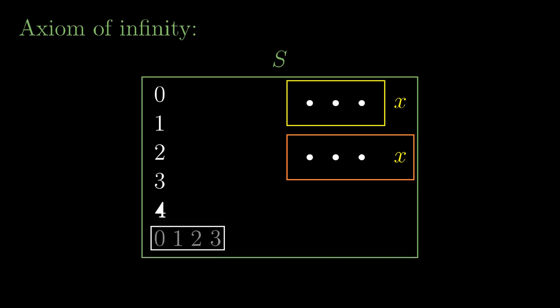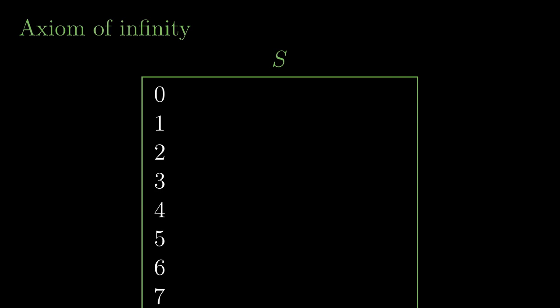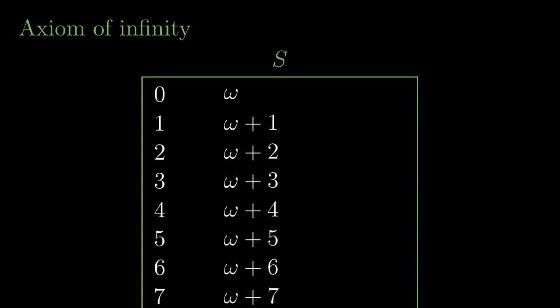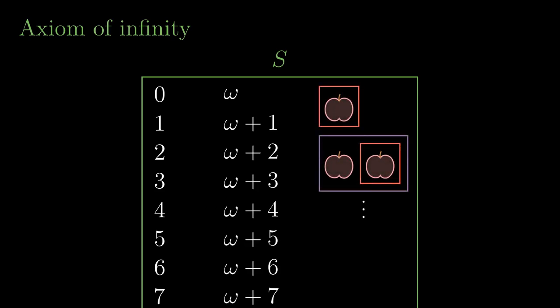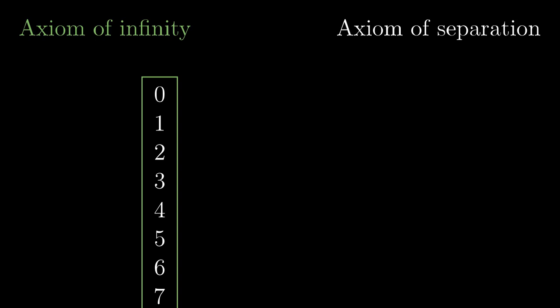It follows that the set S must contain all the natural numbers. However, the axiom of infinity doesn't guarantee that there is nothing else in the set — there could be further ordinal numbers or just any arbitrary sets. Fortunately we have the axiom of separation, so we can get rid of all the extra elements and keep only the natural numbers.